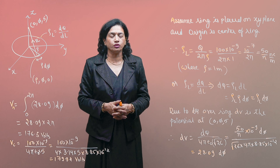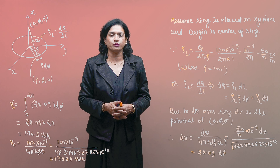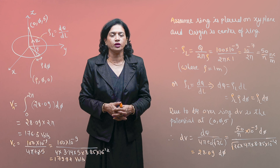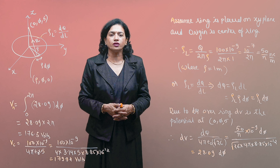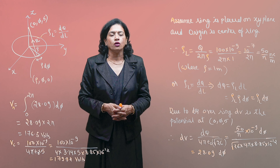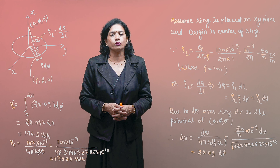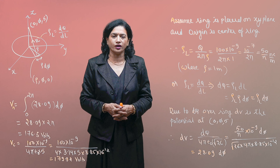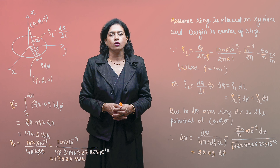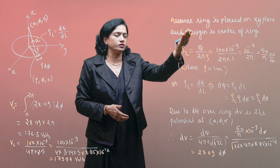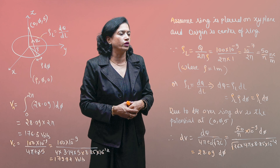Since this ring is given in shape, the charge distribution is uniformly distributed around this ring. So this ring is considered as a line charge. We will assume that the ring lies in the xy-plane and the origin is at the center of the ring.